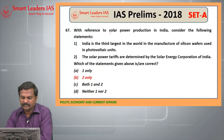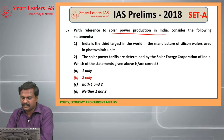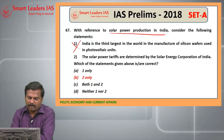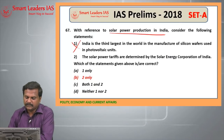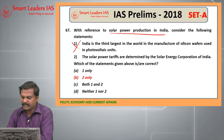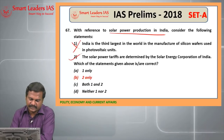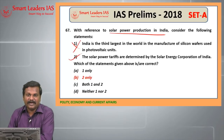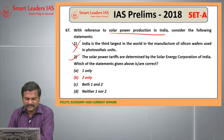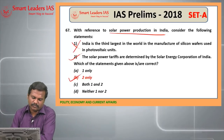67th question: solar power production in India — India is the third largest is a wrong statement. Solar power tariff is determined by the Solar Energy Corporation of India — this is a right statement. So the answer for the 67th question is B, 2 only.